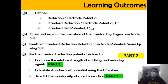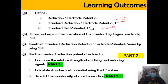In this video we're going to look into the definition of reduction or electrode potential, as well as the standard reduction potential, where this happens at a temperature of 25°C, 1 atm, and at 1 molar concentration. After that, we're going to look into the definition of standard cell potential, where E⁰cell = E⁰cathode − E⁰anode.